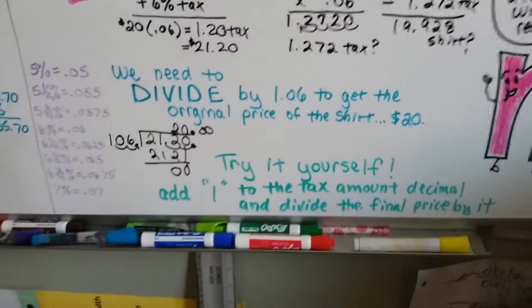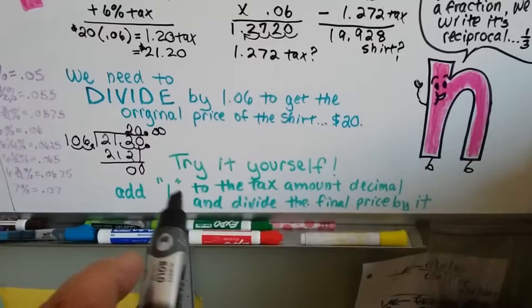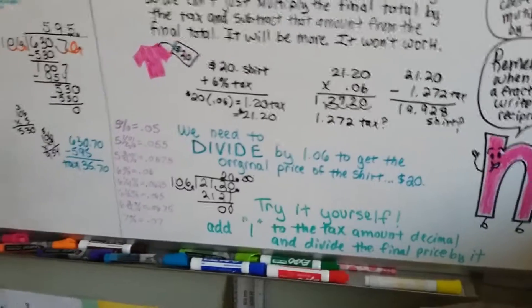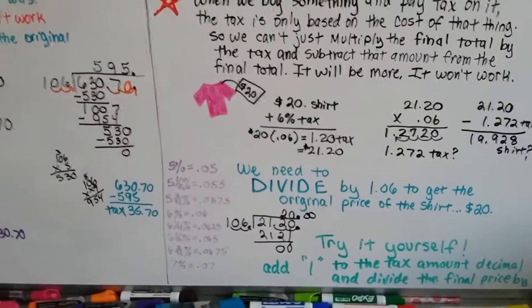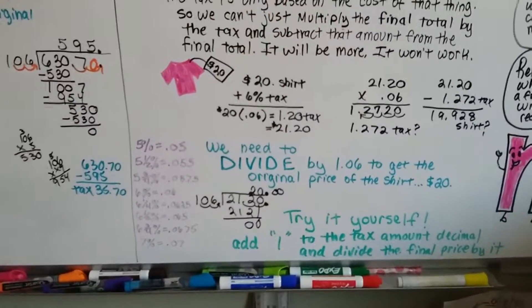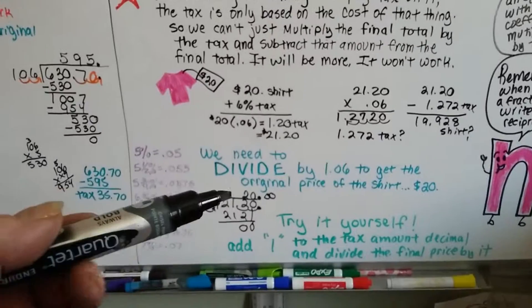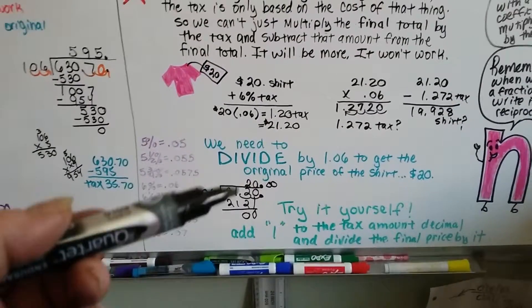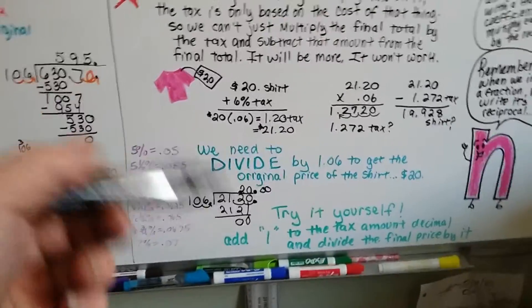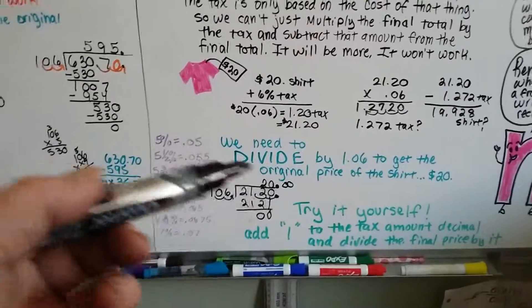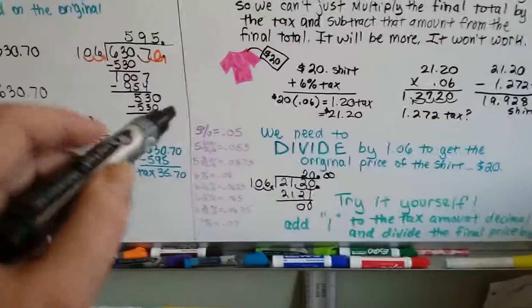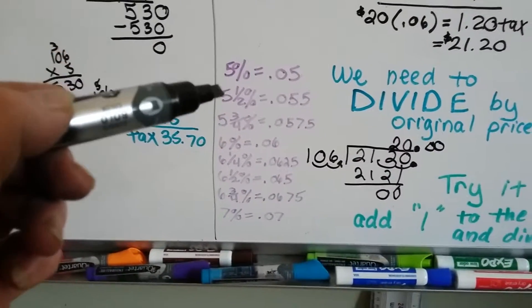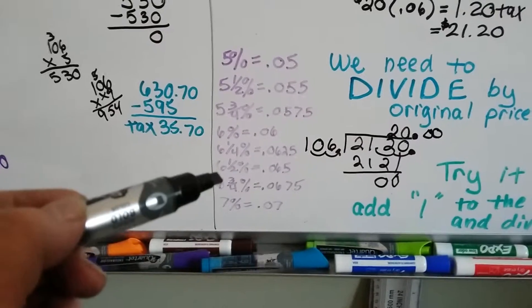So try it yourself. Add 1 to the tax amount decimal and then divide the final price by it. Pick something that you bought, whether it was a shirt or a pair of jeans or your TV or whatever it was that you bought. Figure out what the original price tag on it was. Figure out what your county or state sales tax is. And then whatever the percentage of sales tax is, 5%, 5.5, 5.75, 6, whatever it is.